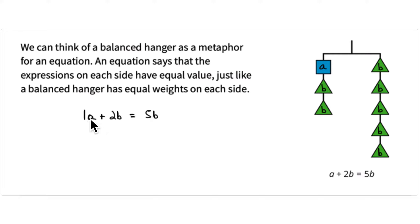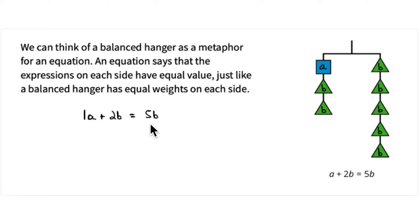I'm keeping the one here with the A to show it's just one A — it's usually not written, it's understood that if there's no number, it's just one of that variable. That number next to the variable is called the coefficient. It goes along with the variable — variables are efficient ways to write mathematics, so the number is the co-efficient.